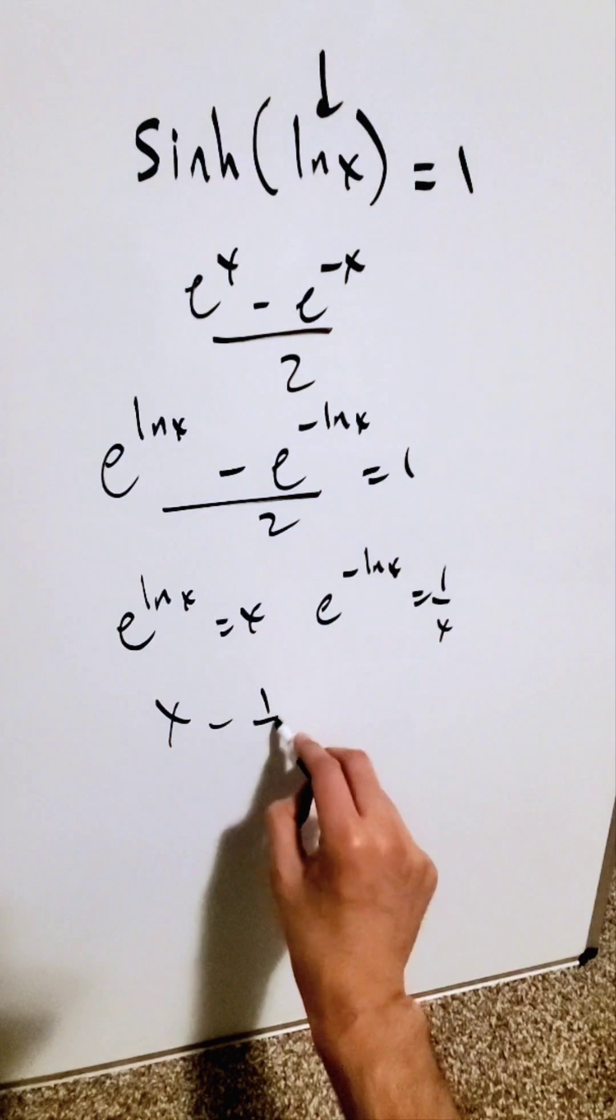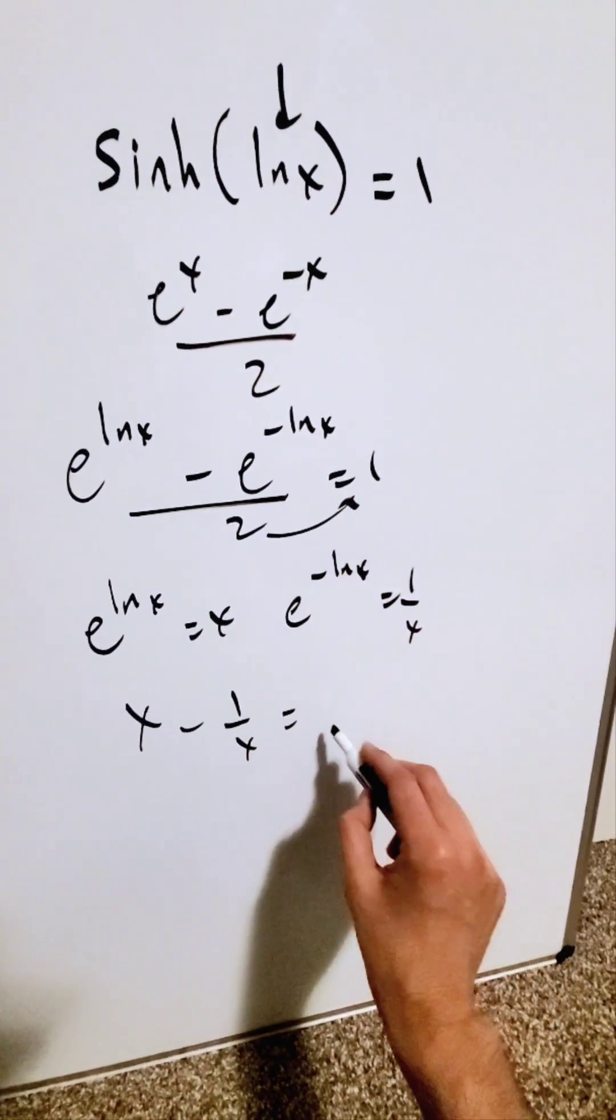Bring them in. I have x minus 1 over x is equal to this 2 will get pushed here on the other side, 2.